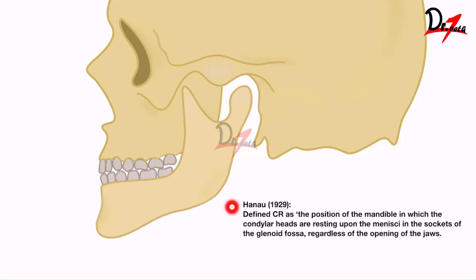Hanau in 1929 defined centric relation as the position of the mandible in which the condylar heads are resting upon the menisci of the sockets of the glenoid fossa, regardless of the opening of the jaw. He said it is the position where the condylar heads are resting upon the soft tissues in the socket of the glenoid fossa.